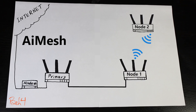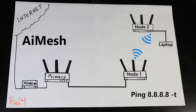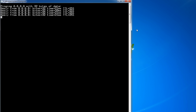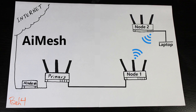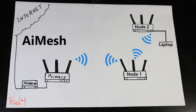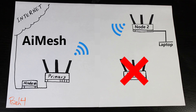In this test, I have connected one laptop with an Ethernet cable to AI Mesh node number two, and I'm also running a continuous ping to 8.8.8.8 to test the internet connection. I'm going to disconnect the cable between the primary router and node number one to see what happens as they switch to the wireless network. Then I'm going to turn off node number one and see what happens as node number two tries to connect directly to the primary router.